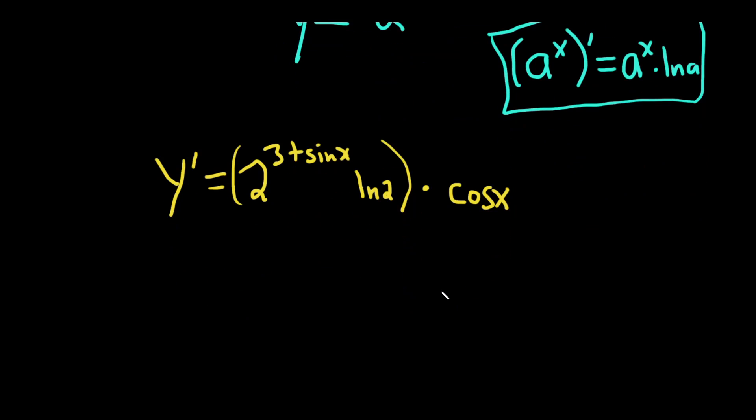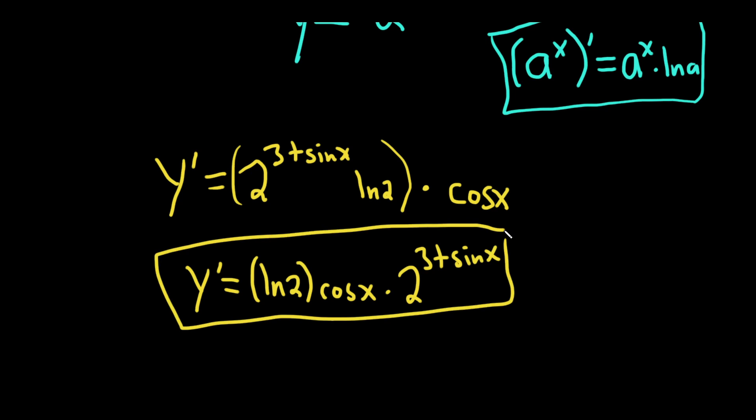You can leave your answer like this, or you can put everything in the front. Let's go ahead and do that. This is the natural log of 2, cosine x, and then times 2 to the 3 plus sine x. And that would be the final answer. I hope this video has been helpful. Good luck.